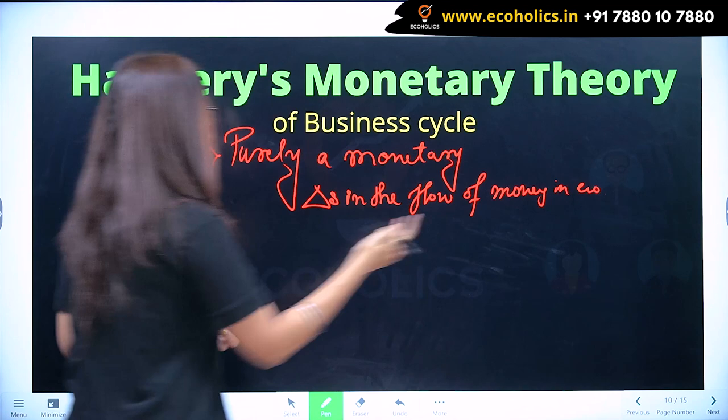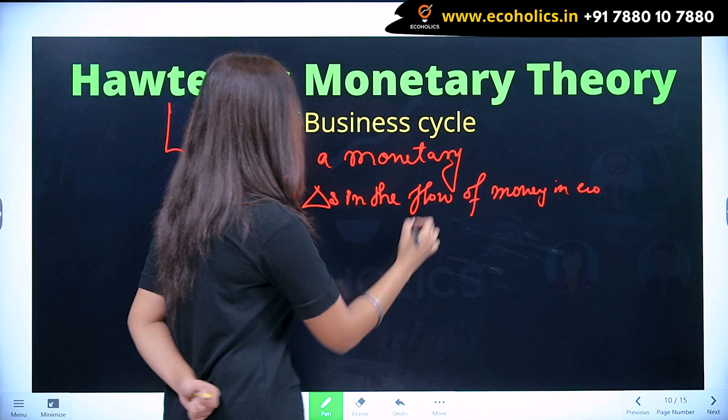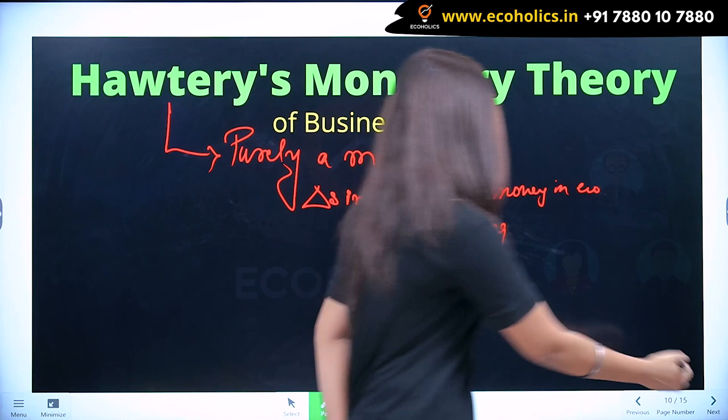This is why there are fluctuations in the business cycle. Now when we think about the flow of money, we think about the banking sector, right? So the whole story revolves around the banking sector and its credit facility. Let's draw a chain, a timeline, and understand.